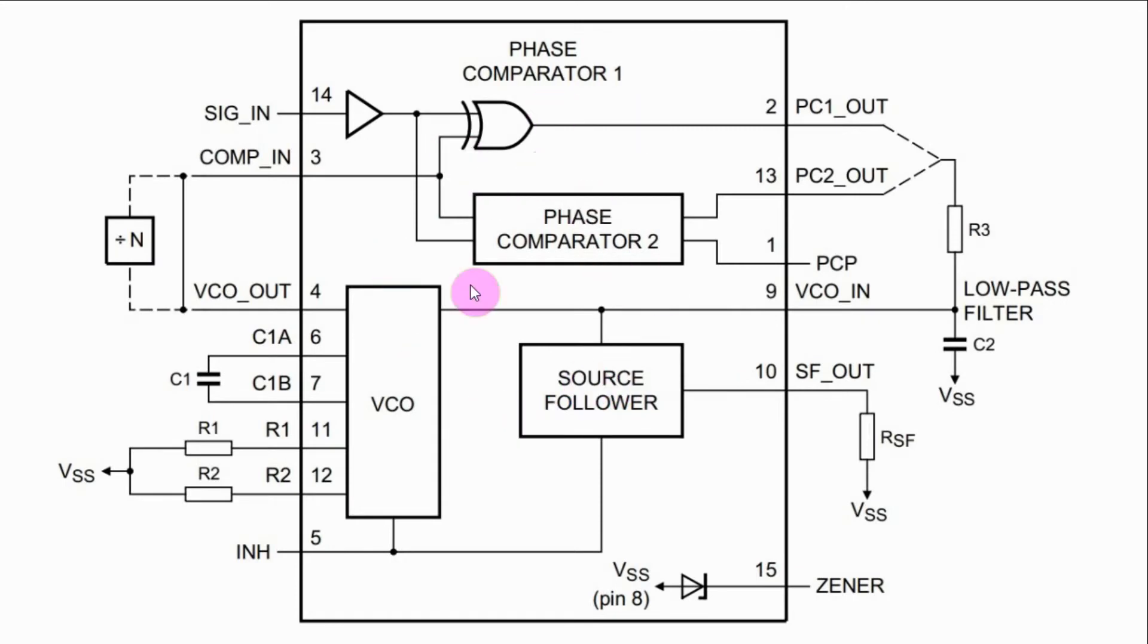This is a functional diagram of the CMOS IC 4046 which is a phase locked loop circuit. We are only using the VCO part of the IC in order to achieve the frequency modulation of the input clock signal to give us at the output the required FM signal.